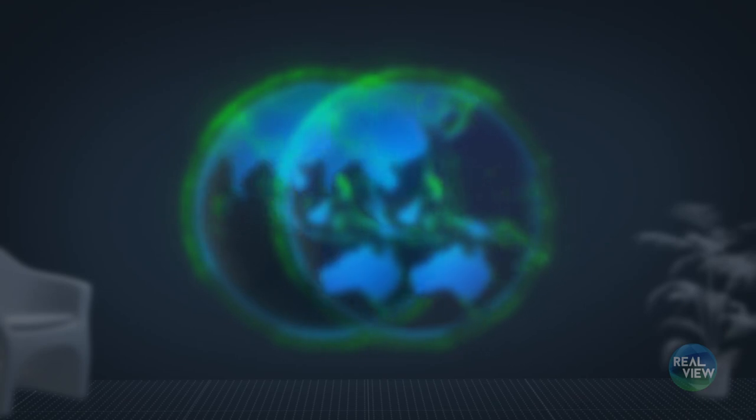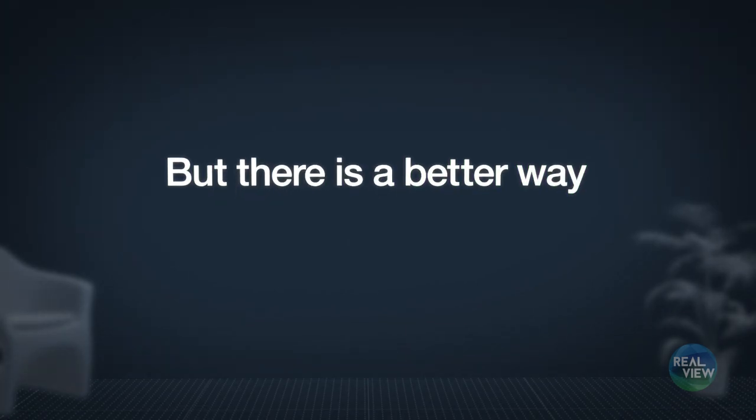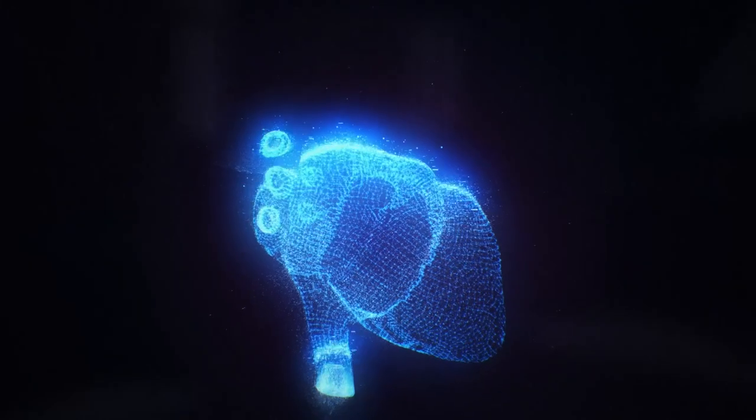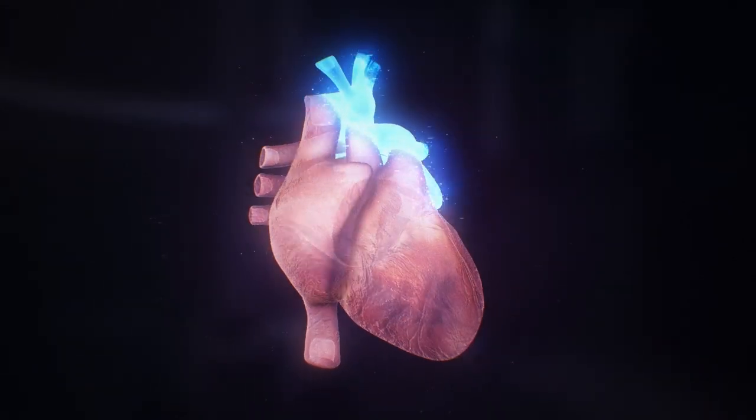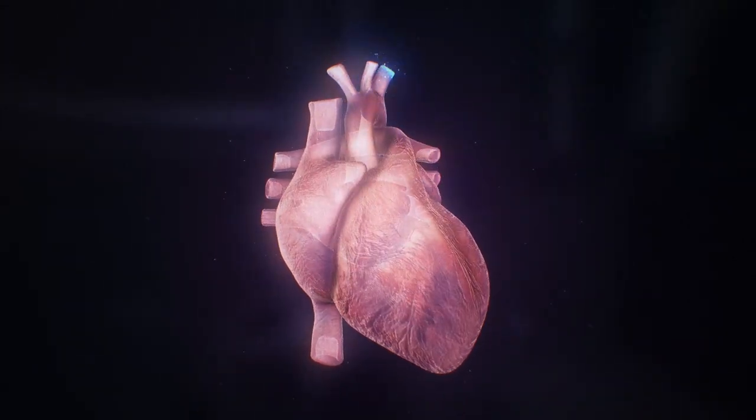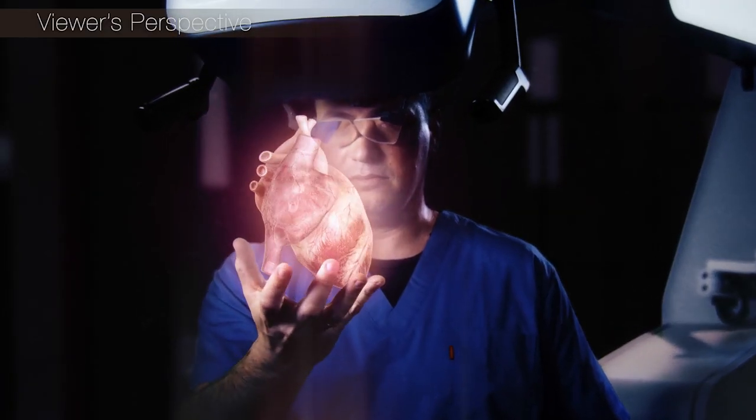But there's a better way. RealView's digital light shaping technology is creating interference-based holography. With this kind of true holography, multiple depth planes at multiple distances are created in real time and projected simultaneously.